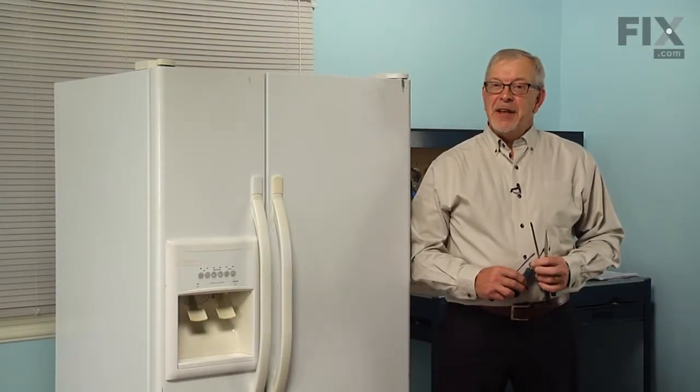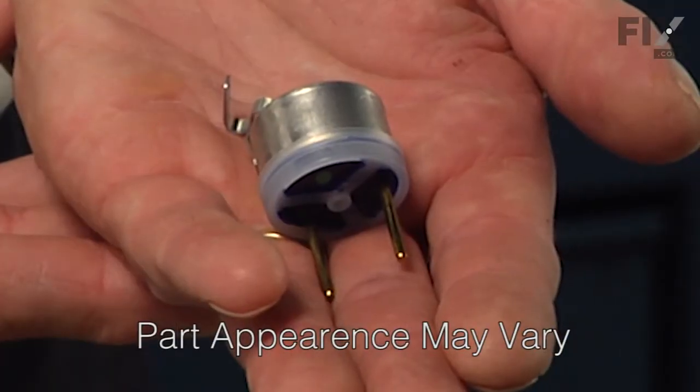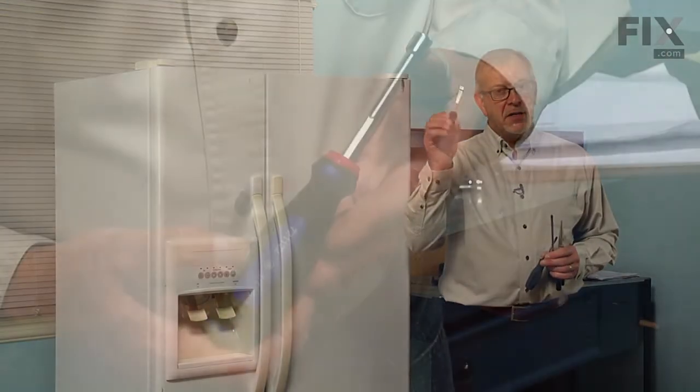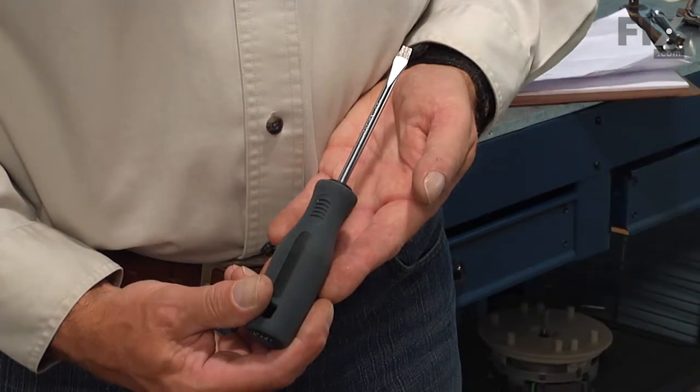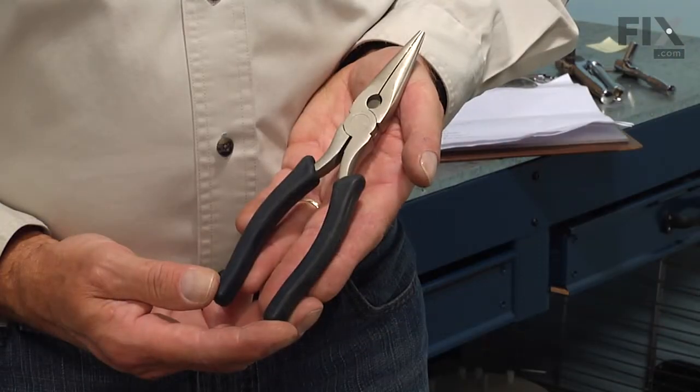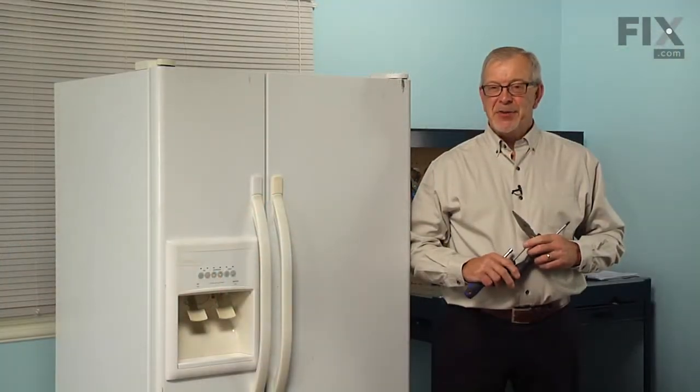Hi, it's Steve. Today we're going to show you how to change the ice maker thermostat on your refrigerator. That's a really easy job. All we're going to need is a quarter inch nut driver, a flat blade screwdriver, a number two Phillips screwdriver, and a pair of needle nose pliers. Let me show you how we do it.